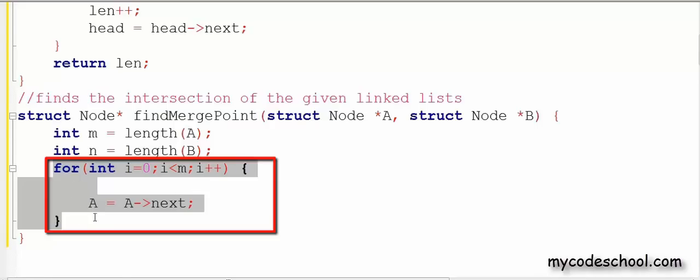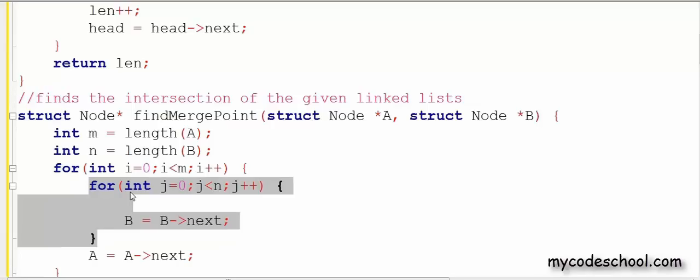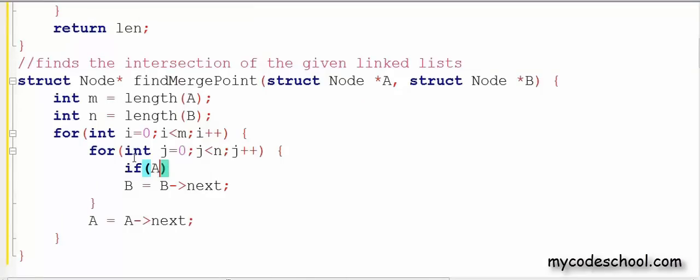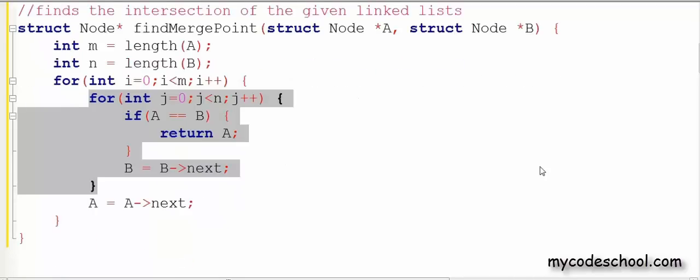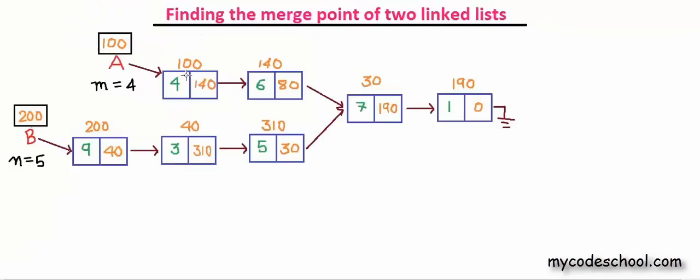I need to check for every node of A whether it is the intersecting node or not for which I have written this for loop and updating A with its next every time. I need to compare each node of A with all the nodes of linked list B for which I have written this for loop. And if there is any matching node, we simply return that node from this function. Now if we do not find any match in one iteration of the I loop, then we need to reset B to the starting node.